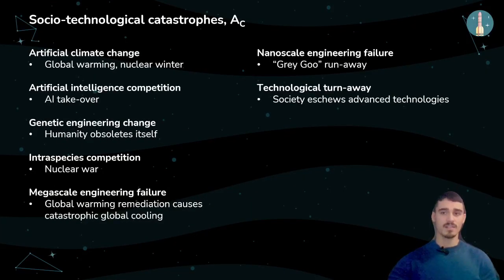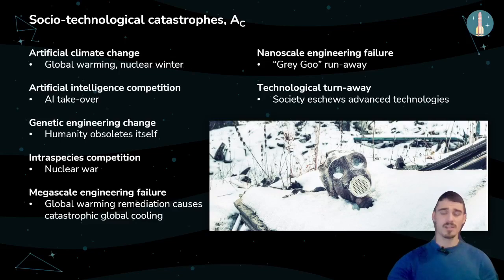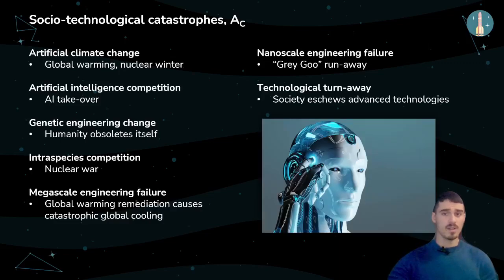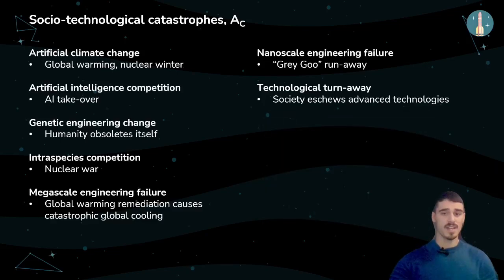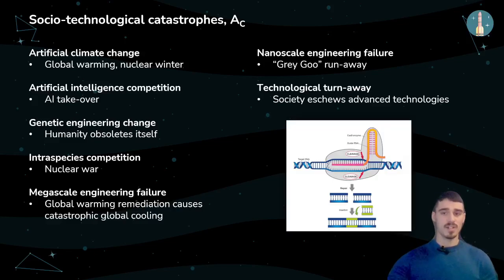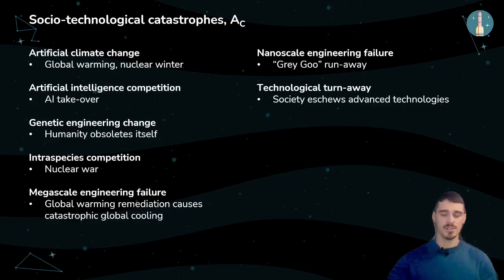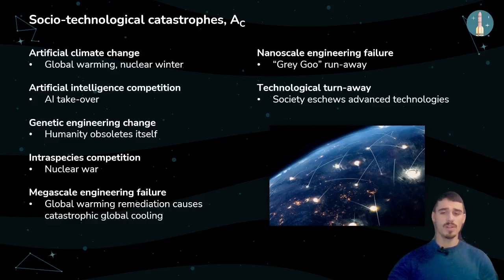The following seven scenarios are socio-technological catastrophes. First, artificial climate change — global warming or a nuclear winter could both lead to extinction. Artificial intelligence competition — we need to be careful with what we create if we don't want to become prey of AI. Genetic engineering change — CRISPR-Cas9, for example, has many advantages, but we need to be alert about the negative consequences of messing with our DNA. Intraspecies competition — the global arms race has brought us to a point where we could destroy the Earth multiple times with our current arsenal.